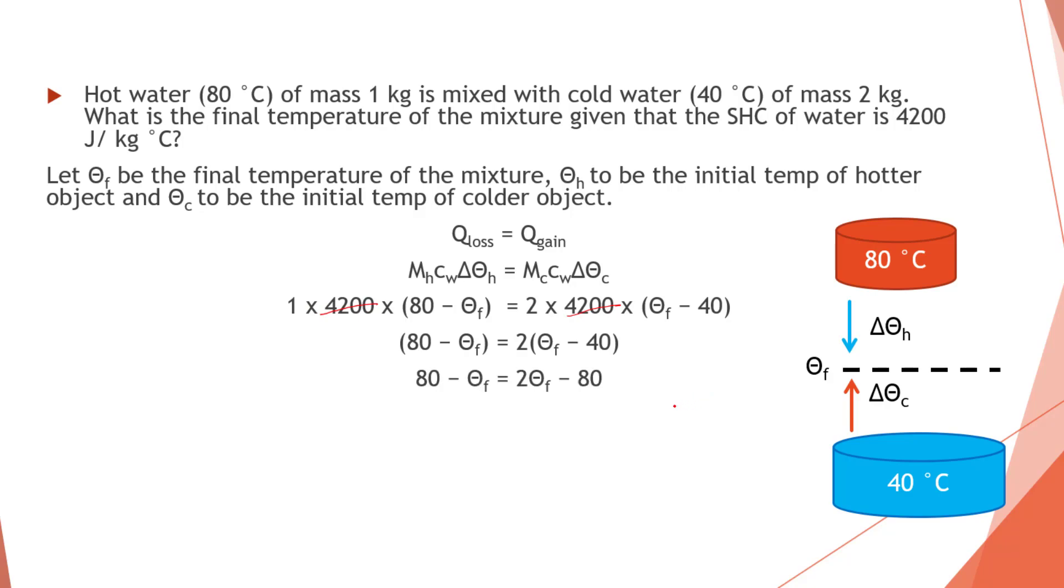Expand, gather the terms. And you find that this time around 3 delta F equals 160, which is 53.3 degrees Celsius. So this also shows that having more cold water in this case would bring the temperature closer to the colder water. So that's all for now.